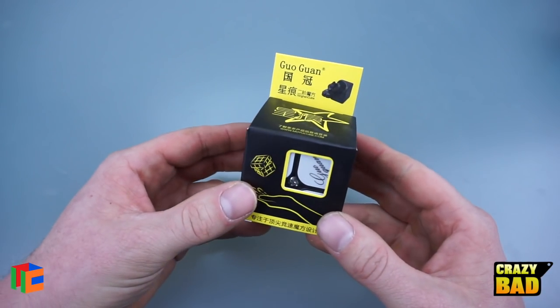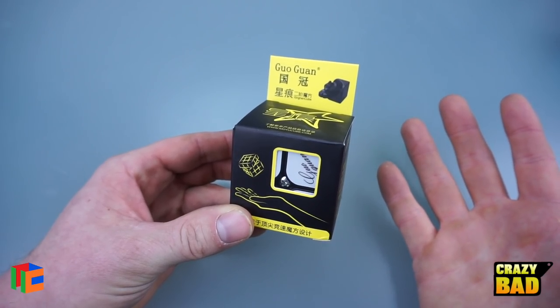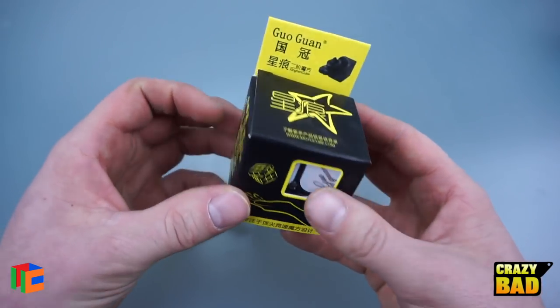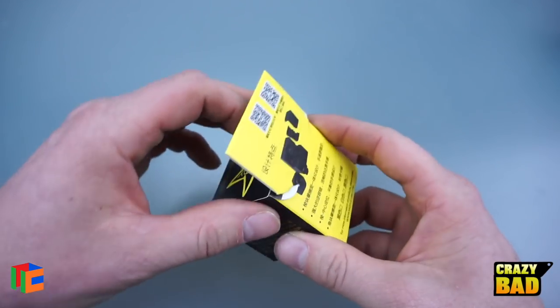Hello everybody, in today's video we're going to be taking a look at a new 2x2. This is the Guaguan Xingen, I don't know, X-I-N-G-H-E-N. Anyways, it's a new 2x2 and it promises to be one of the best, if not the best, on the market, so I'm really excited to check this one out.